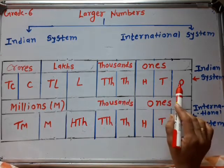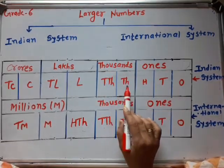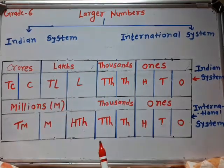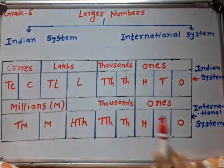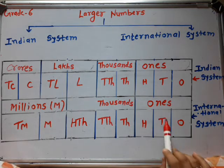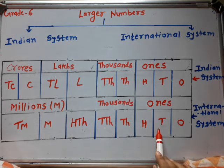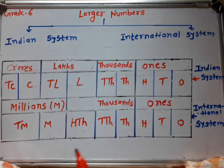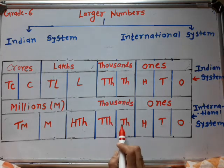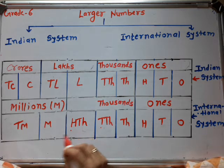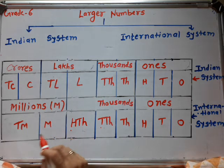So, to summarize the difference: in the Indian system, the ones period has ones, tens, hundreds; the thousands period has thousand and ten thousand; the lakhs period has lakh and ten lakh; and the crores period has crore and ten crore. But in the international place value system, the ones period is divided into three places — ones, tens, hundreds — and the thousands period is divided into three places: thousand, ten thousand, and hundred thousand. The millions period is divided into million, ten million, and hundred million.